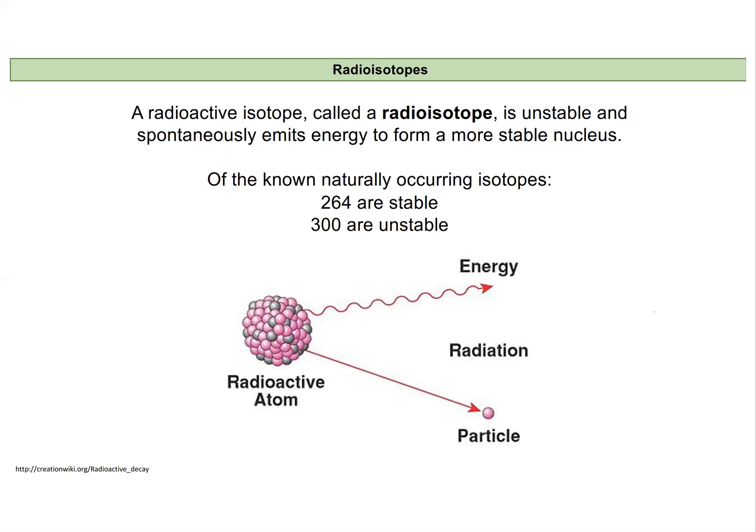Of all of our known isotopes that occur naturally, about half of them are unstable, a little more than that. So this is more common than otherwise thought. And what's really happening is this is the atom's nucleus right here. And if it is unstable, it's going to try to emit energy and kick out a particle in hopes of reaching a more stable configuration.